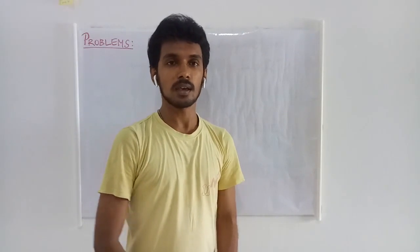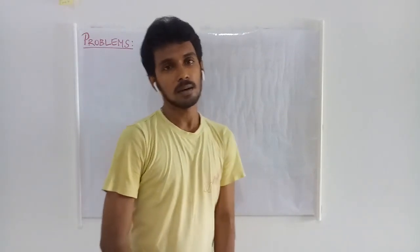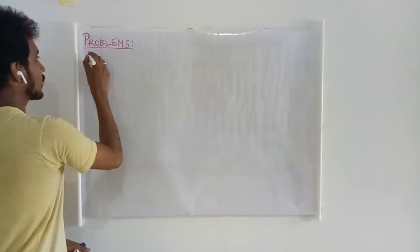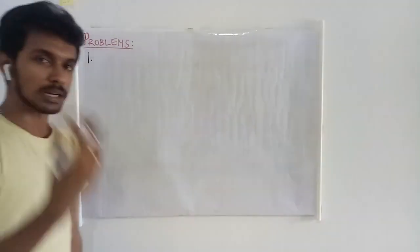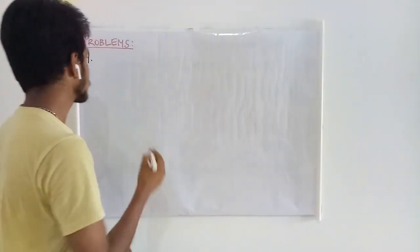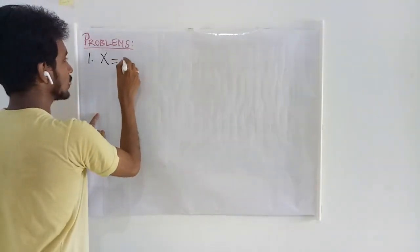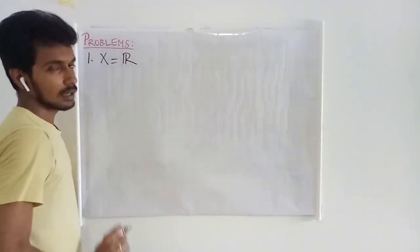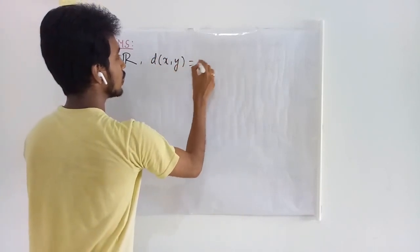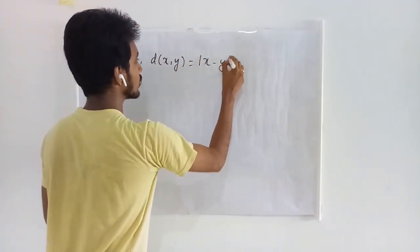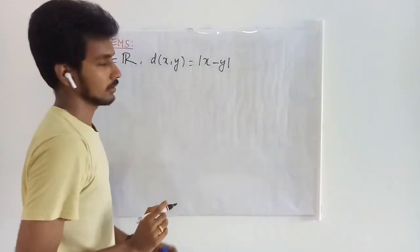Now we are going to see few problems on metric spaces. The very classical problem that any textbook gives you in metric spaces is we are going to consider the set to be the set of real numbers, and the metric is defined to be the absolute value of the differences between those two points.